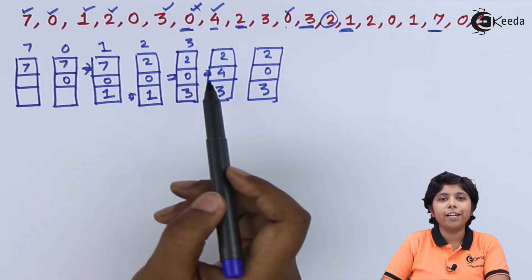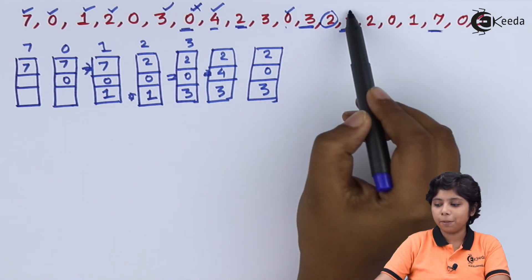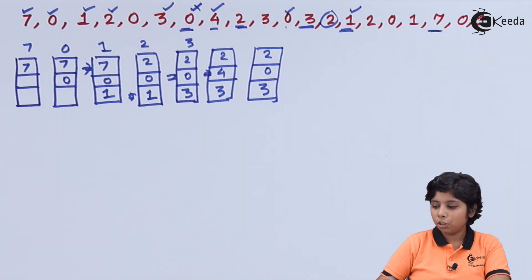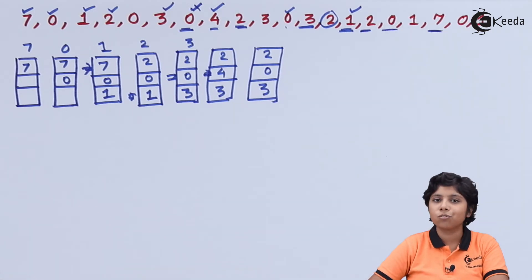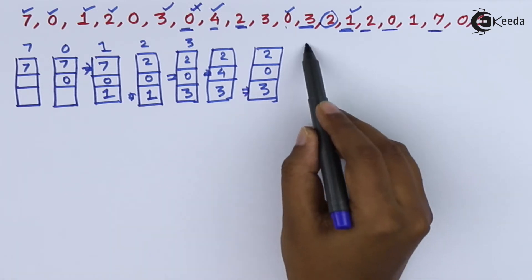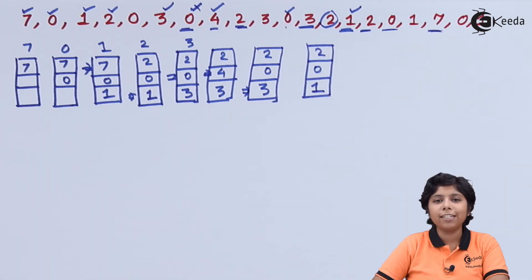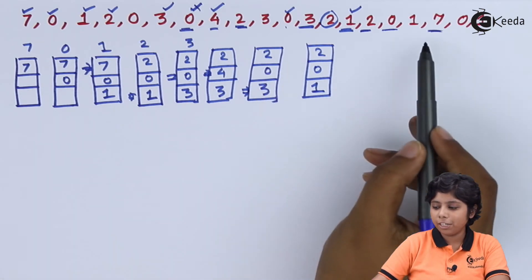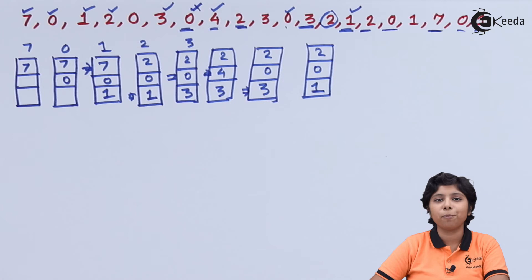After that, pages 3 and 2 both are present, so they will not cause a page fault. After that, page 1 is appearing and it causes a page fault. Among 2, 0, and 3: 2 is appearing first, 0 is appearing next, and 3 is not appearing at all. So 3 is replaced, giving us frames with 2, 0, and 1. When page 7 is appearing, 0 and 1 appear next but 2 is not appearing at all, so 7 causes a page fault replacing 2.